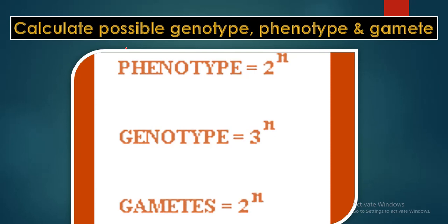Hello friends, today we are going to discuss how to calculate phenotype, genotype, and gametes. How to calculate the question of phenotype, genotype, and gametes? What is the number of heterozygotes? How many heterozygotes are in your examples?